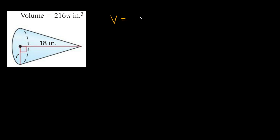Now let's try one more. We're given a cone with a right angle. The height of the cone is 18 inches and we're trying to find the radius. We're told the volume equals 216π inches cubed. Since we're given the volume, we'll use the formula: V equals one-third π r squared h, where r is the radius and h is the vertical height.